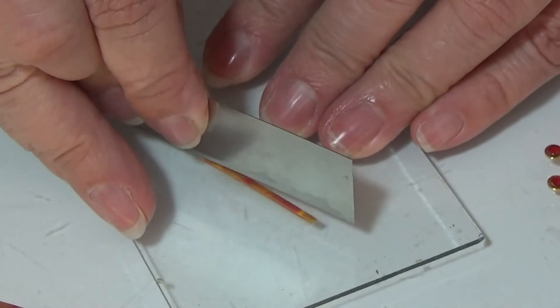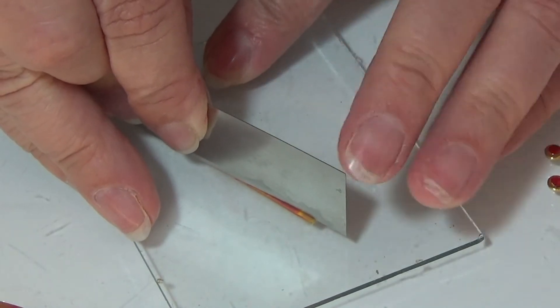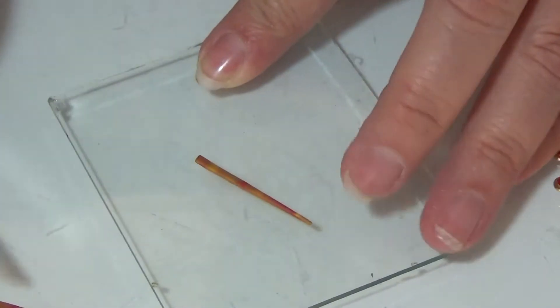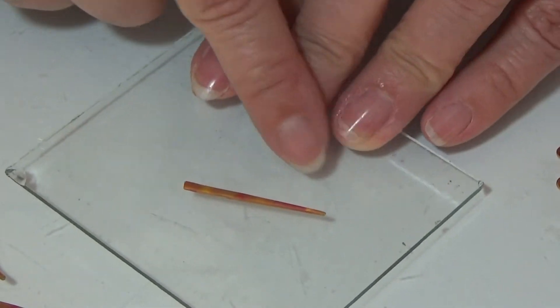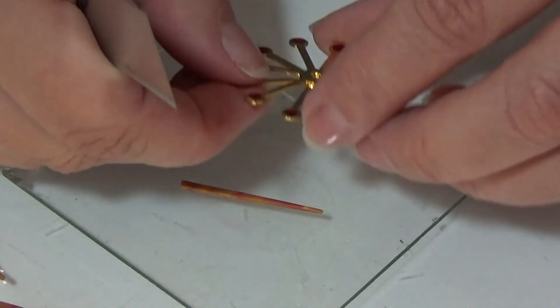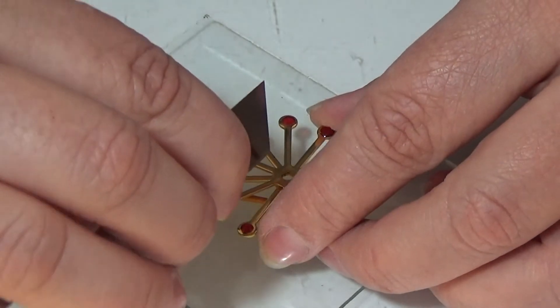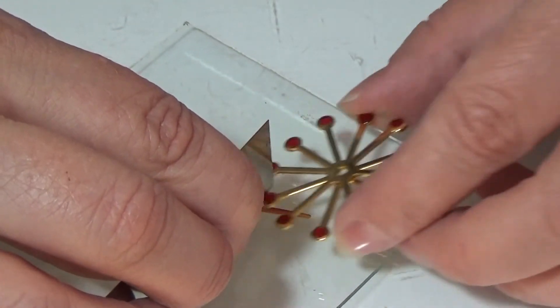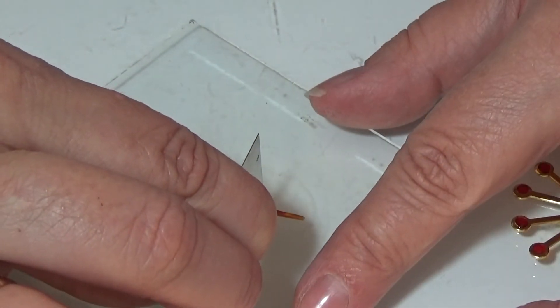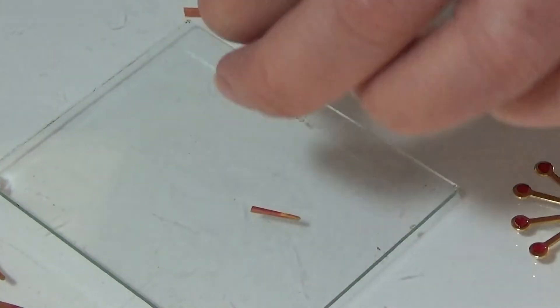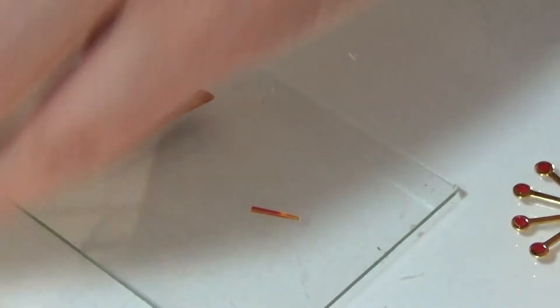I'm going to make it like pointy here as you can see, I have a point right there. And I don't want this half as long as the other one so I'm going to make that end around there. Then I take a leftover piece.